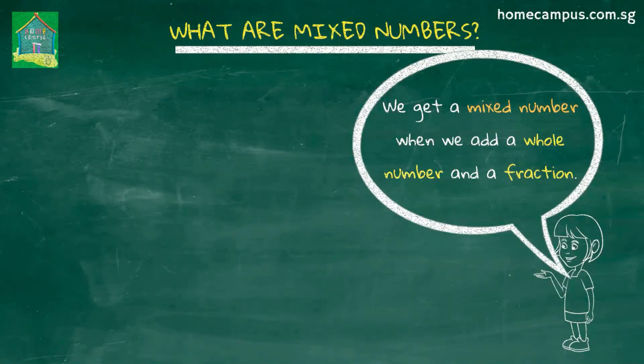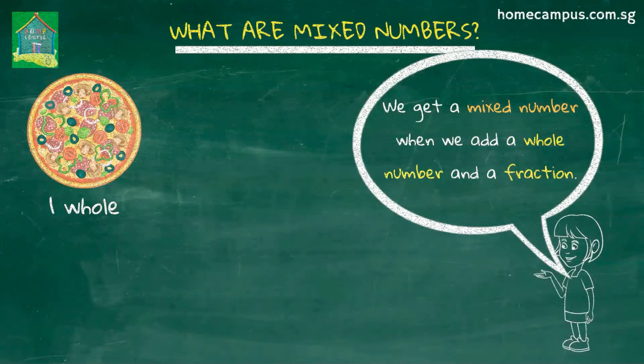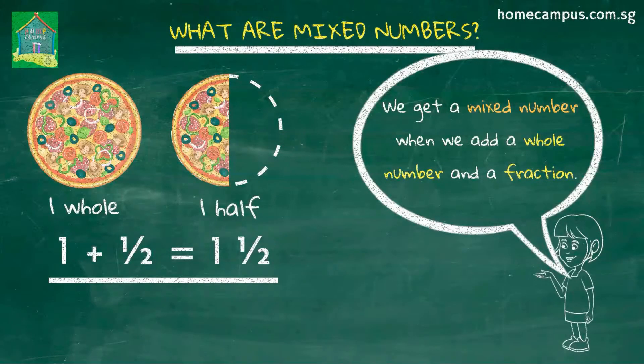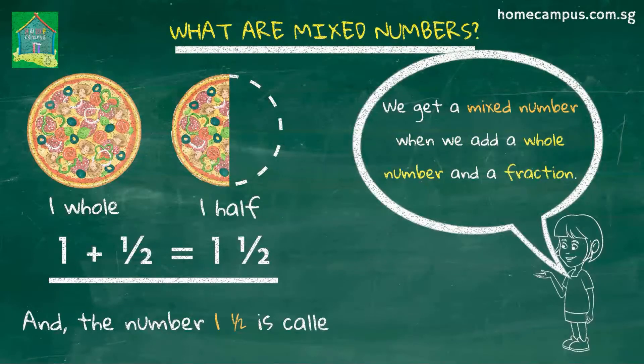Let's learn it with an example. Here's one whole pizza. Here's half a pizza. Together we have one plus half or one and a half pizzas. This number one and a half is called a mixed number.